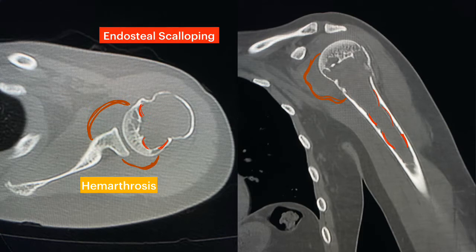Importantly, the lesion extends beyond the physis. Also, because of the fracture there is a large hemarthrosis within the glenohumeral joint. Please note that there is no periosteal reaction in this examination and there is no evidence of matrix production.